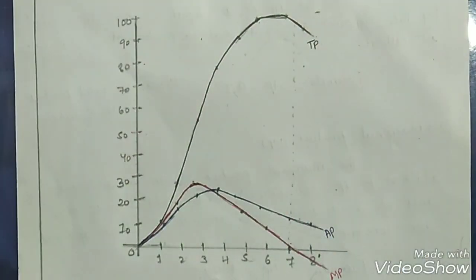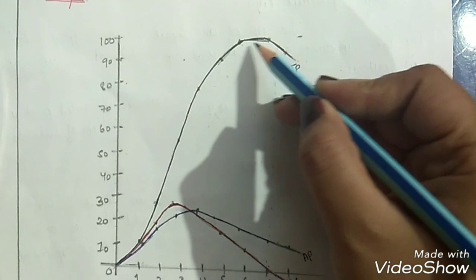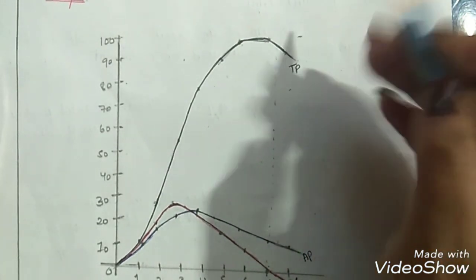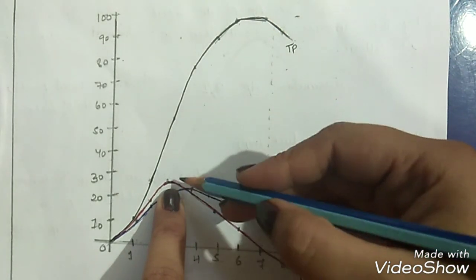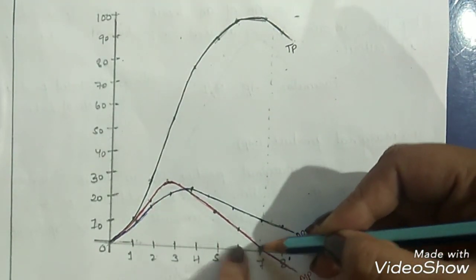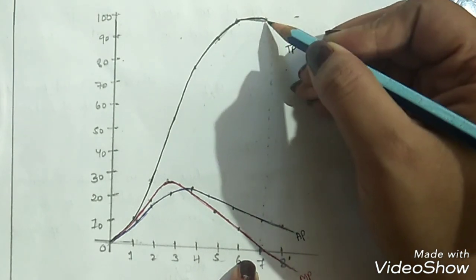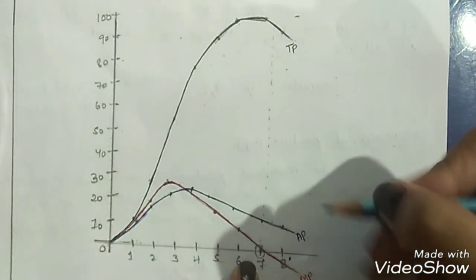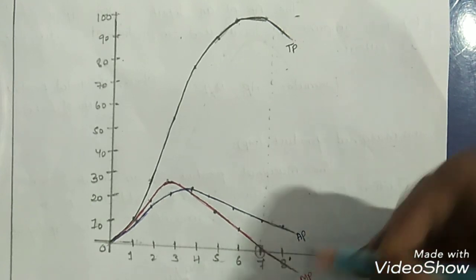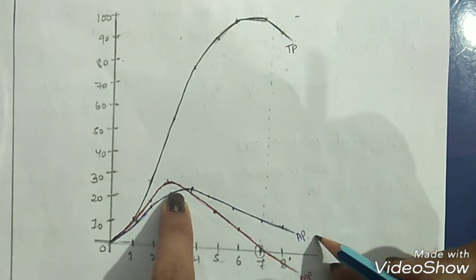Looking at the graph: the total product curve goes on increasing up to a certain point, remains constant, then starts to decline. The red curve is marginal product — it increases in the initial stages, then diminishes, and at one point goes negative. When total product is at its maximum, marginal product is zero. The blue curve is average product — it also increases, and when marginal product starts to fall, average product falls too.